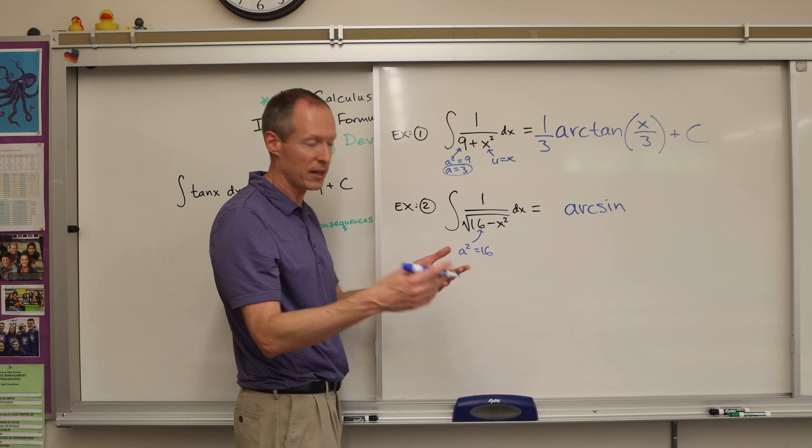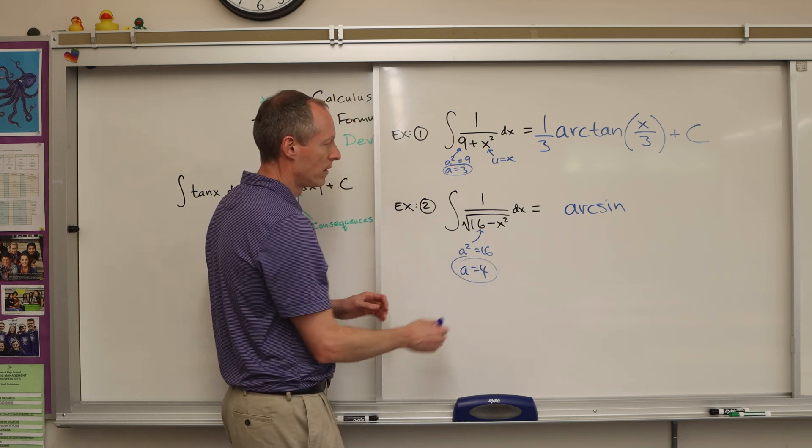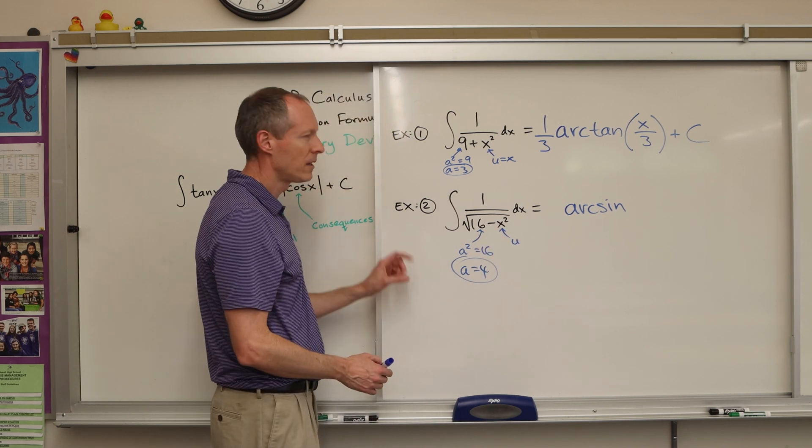So if a squared is 16, a is, fill in the blank, a is 4. So we know a is 4, so this right here, that's just going to be our u.